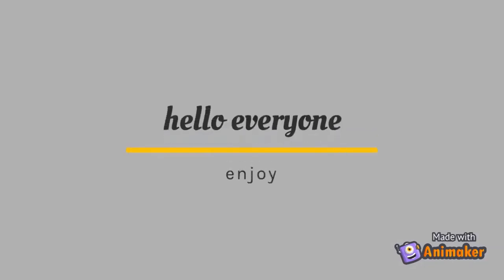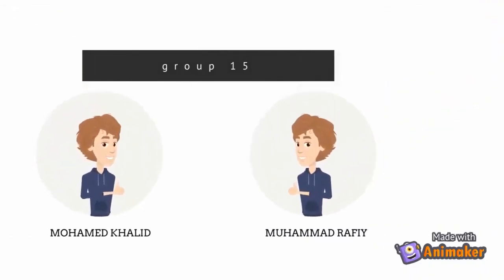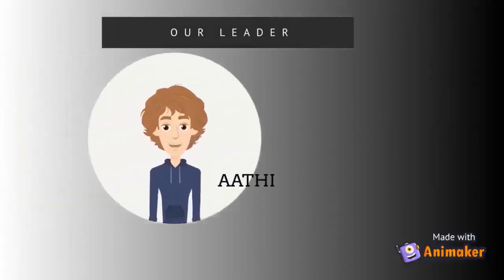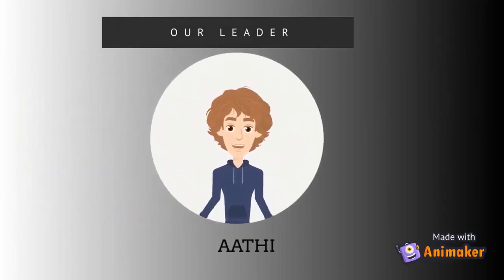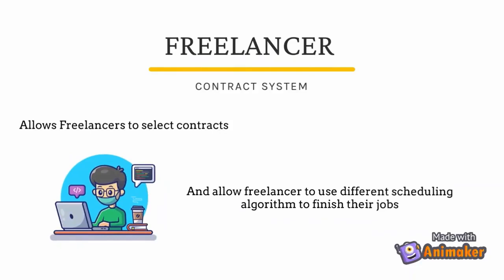Hello everyone. Welcome to our animated video. We are from Group 15. Our group consists of three members: first is Muhammad Khalid, second is Muhammad Rafi, and our group leader is Outie. Our system name is the Freelancer Contract System.